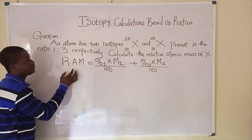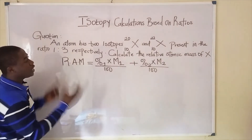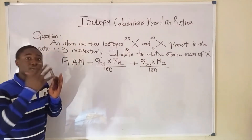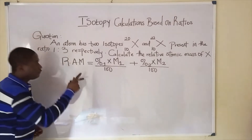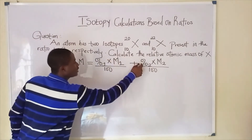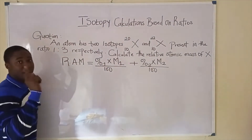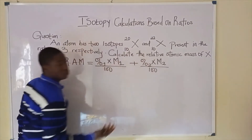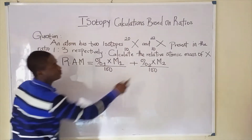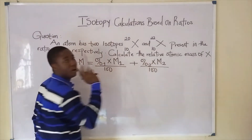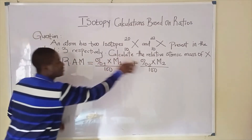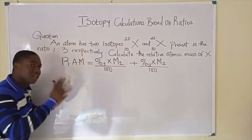So they are asking us to get the relative atomic mass of x. Now if you look at the formula, it does not directly use ratio. Before we use this formula, we need to determine the percentage abundance of each isotope, because the mass numbers are already known. The mass number of the first isotope is 20 and the mass number of the second isotope is 22. So we need to determine the percentage abundance of each isotope.